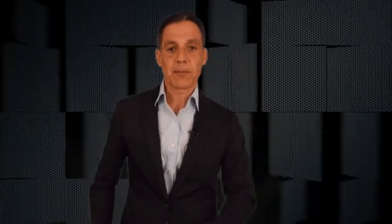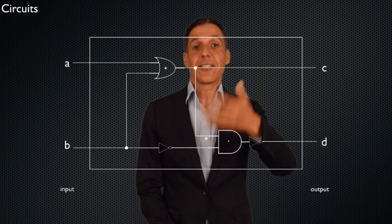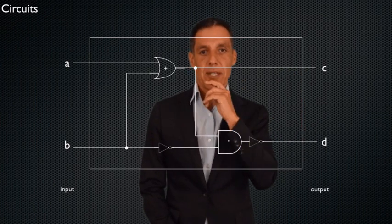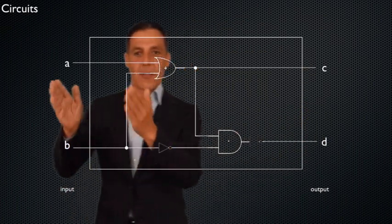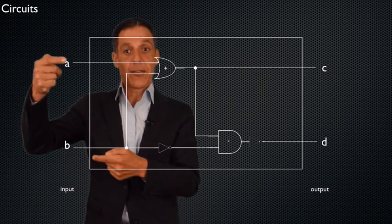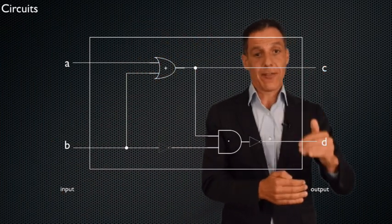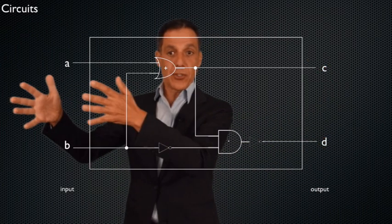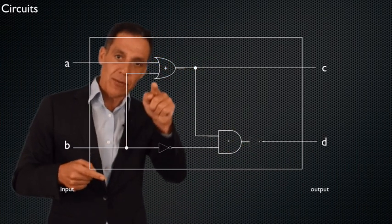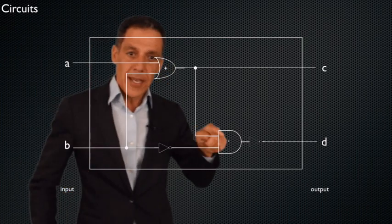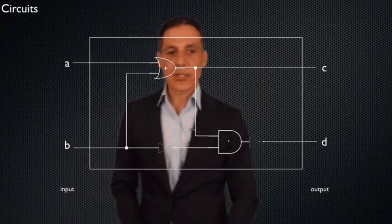Let's look at a really simple example. This is not a meaningful computation — I just want to show you what a circuit looks like, and then we'll get into meaningful computation in a little bit. Typically in a circuit, the input is on the left. I have two inputs here, A and B — each can be a zero or one. I have two outputs, C and D, which also have to be zero or ones because they are the output of pushing binary inputs through a series of gates. And here are my gates — here's an OR gate. Remember, the shape of the OR gate has that sort of funny rounded back and a plus sign in the middle.